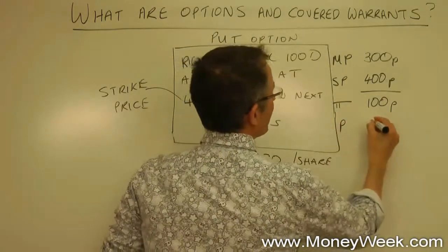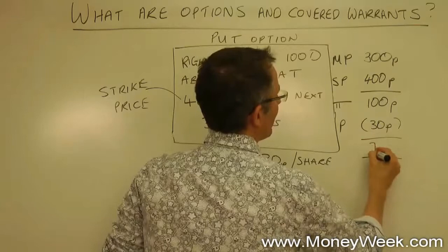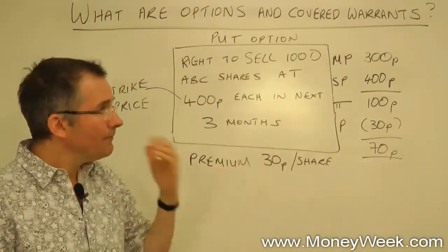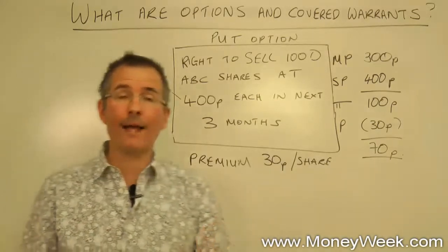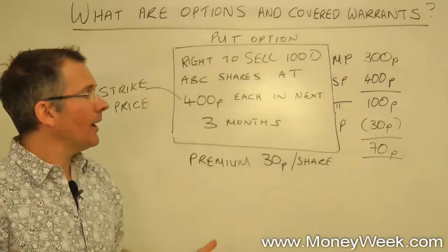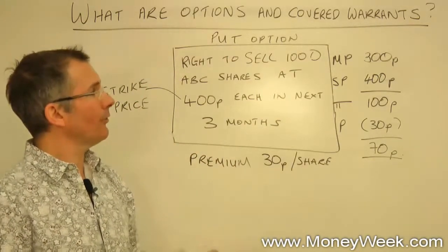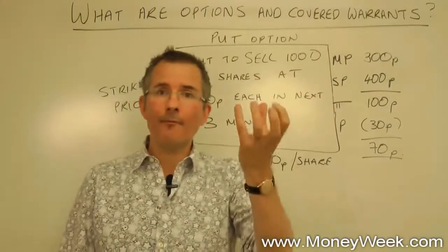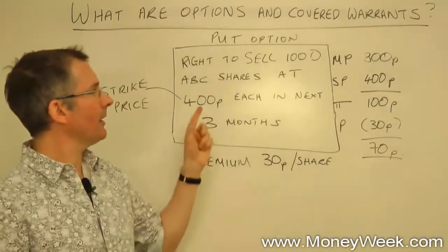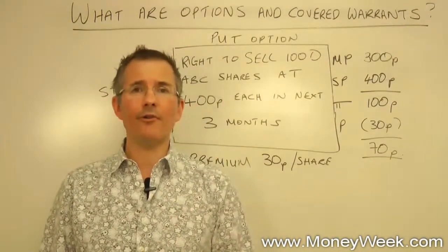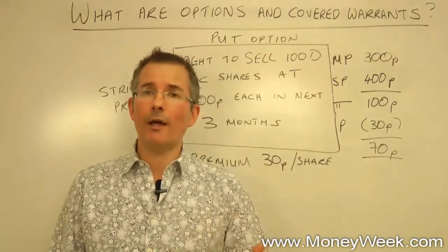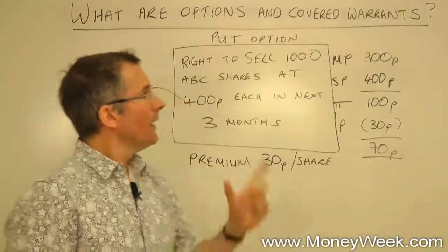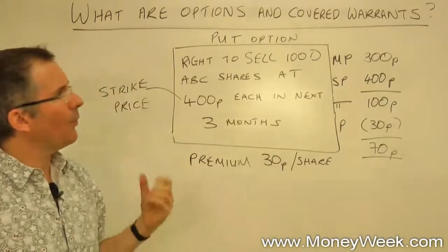They've gone into the market, bought the shares for 300 pence, dumped them on me for 400 pence, taking a profit of 100 pence. But they paid me a premium up front — that's non-refundable. Option holders always pay a non-refundable upfront premium. Knock off the 30 pence premium and they're making a profit of 70 pence per share — on a thousand shares that's 700 pounds. That's the point of a put option: designed to make money when prices fall in the hands of the holder. I only wrote it hoping it wouldn't get exercised — I was hoping to pocket the 300 pounds premium and have the option expire.